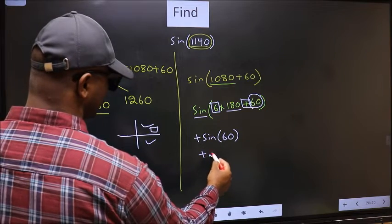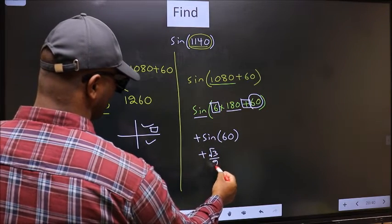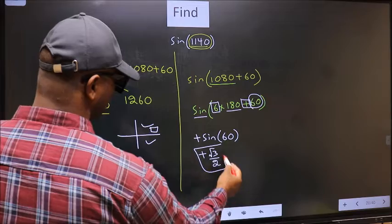So plus sin 60 is root 3 by 2. This is our answer.